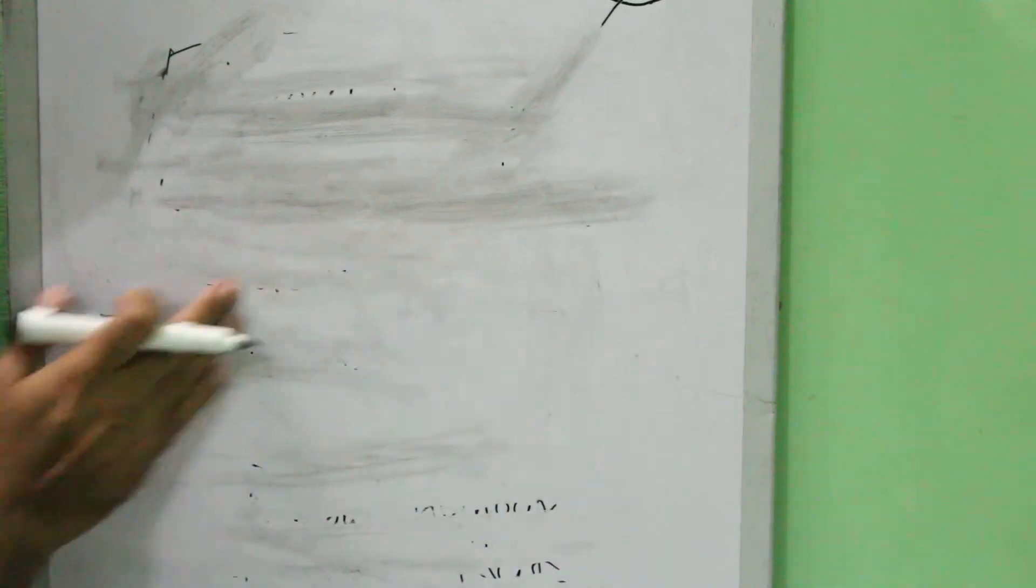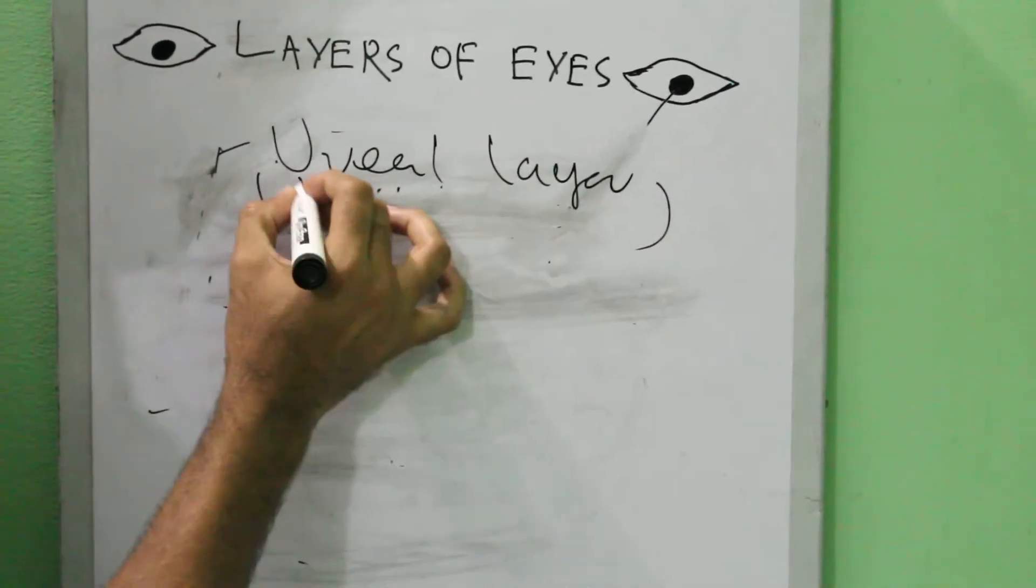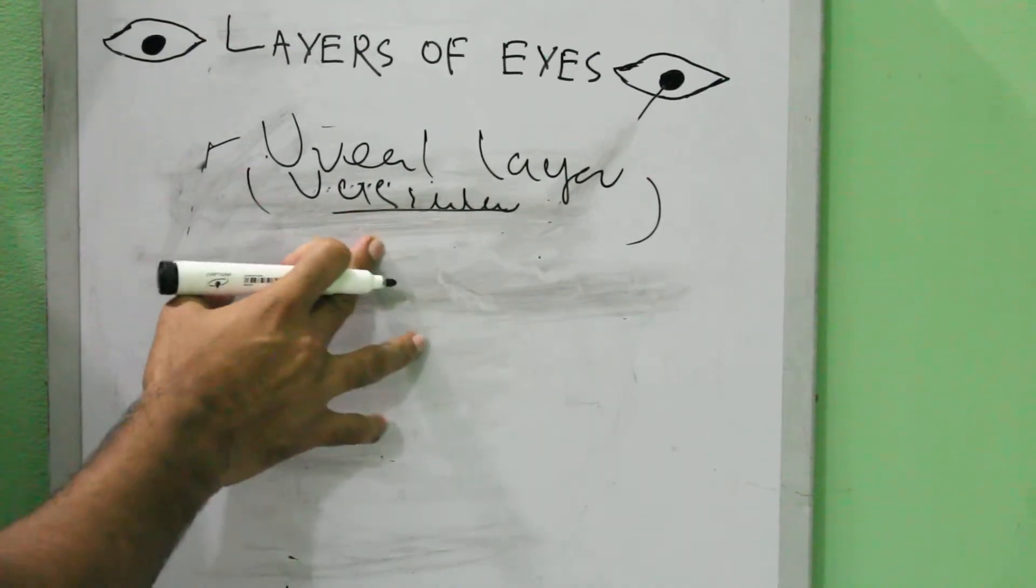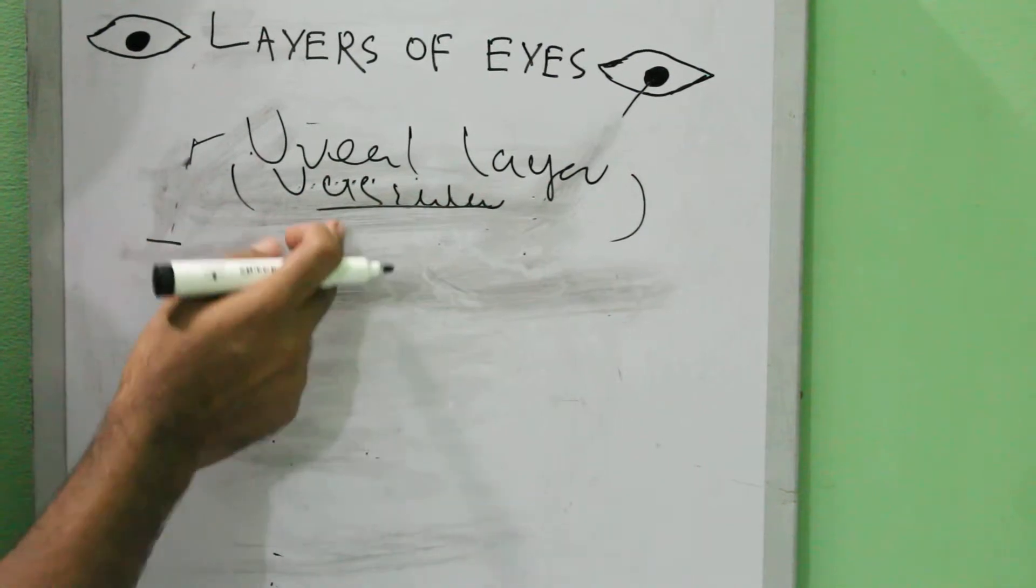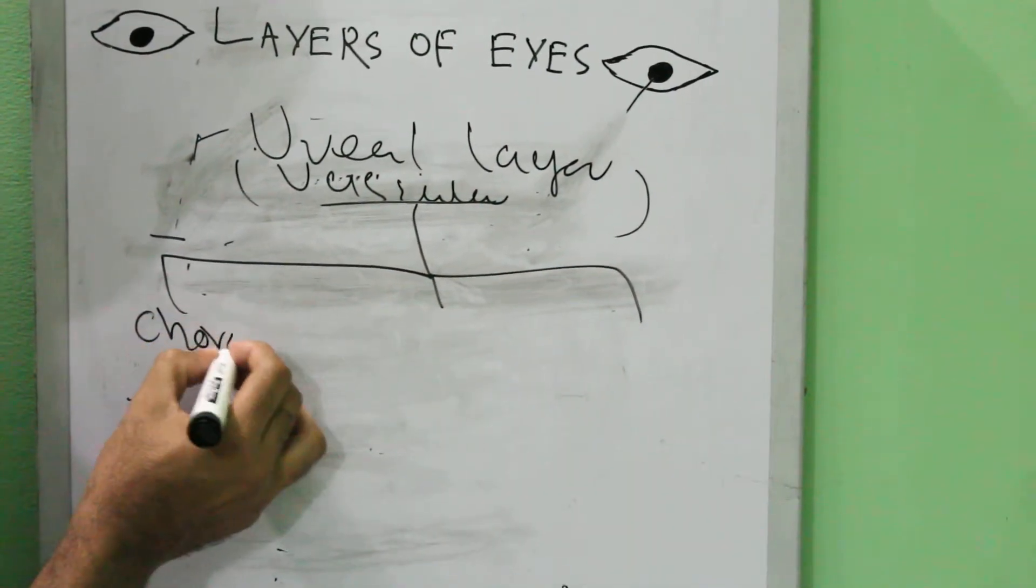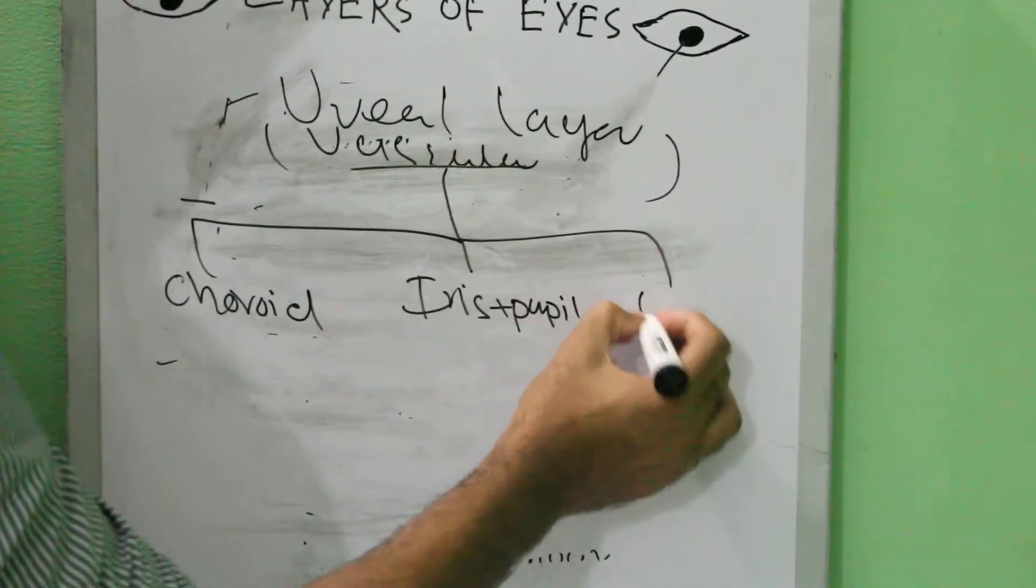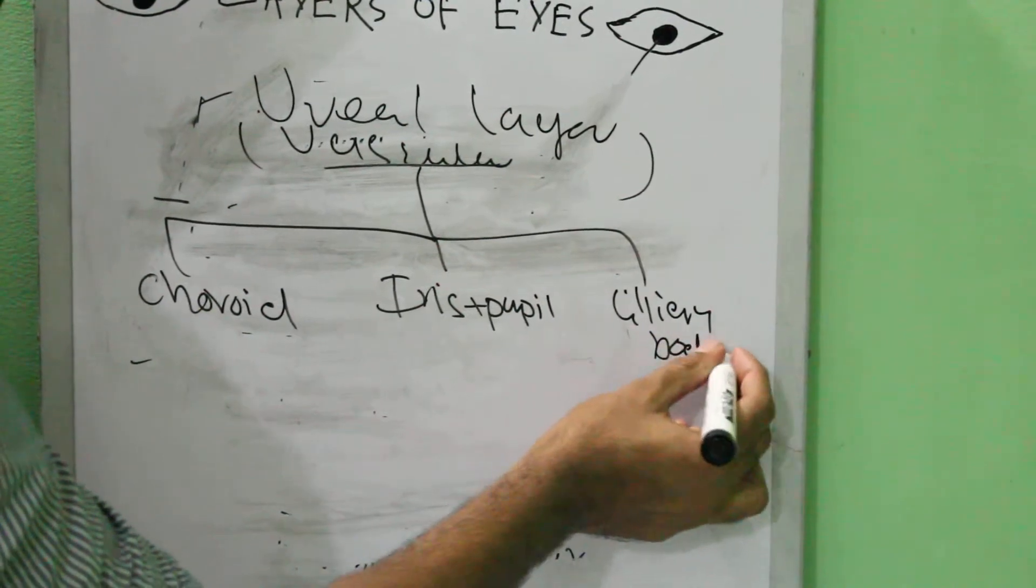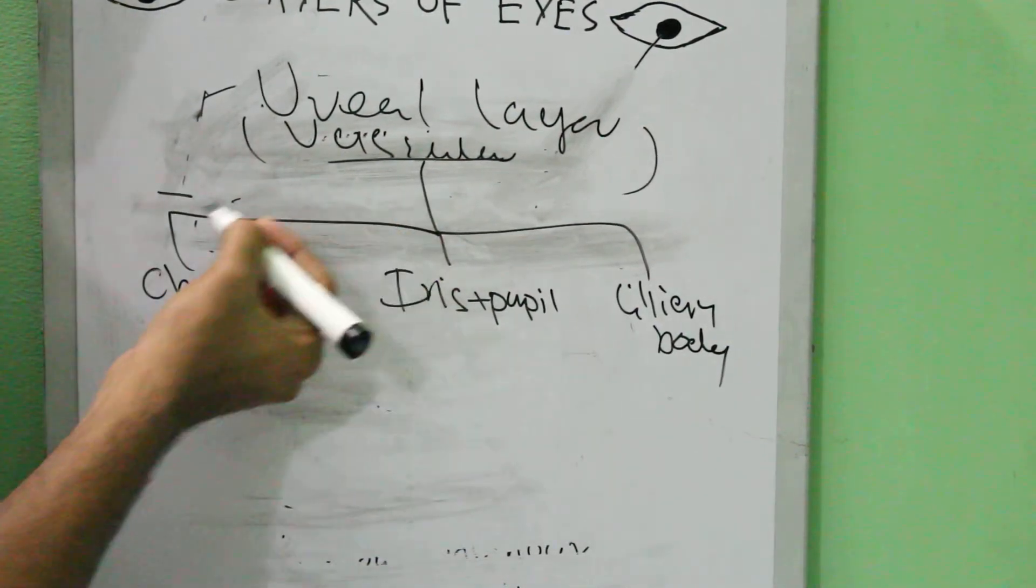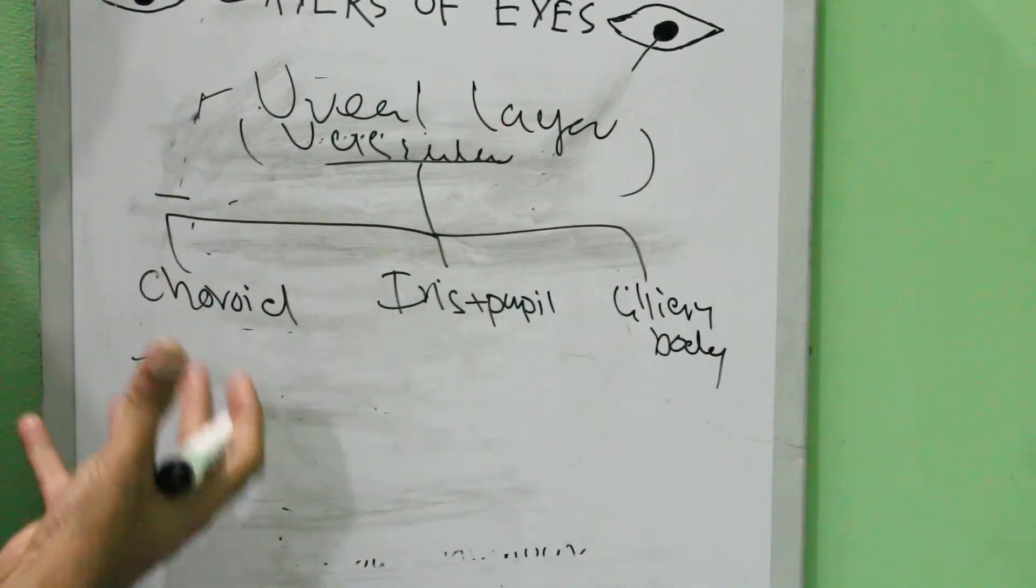Now the second layer is the uveal layer. The uveal layer is the vascular layer. It provides the nutrition that the eye needs. In this layer there are other parts: it has choroid, it has iris including pupil, and ciliary body. These are the parts which are present in the uveal layer. It is the layer that contains all the blood vessels which bring the essential nutrients from the body and nourish the eye.